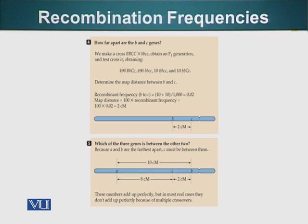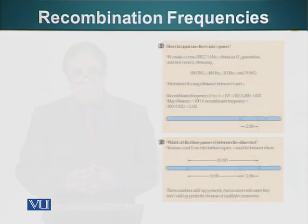Now with this information we can, we know the precise position, precise relative position of these three genes. A and B are 10 centimorgans apart and A and C are 8 centimorgans apart and C and B are 2 centimorgans apart.